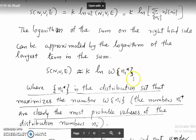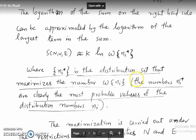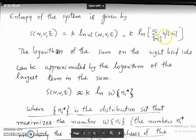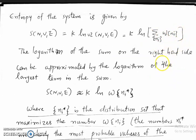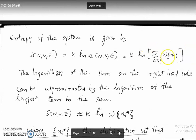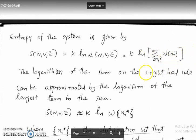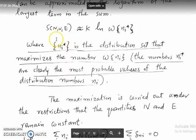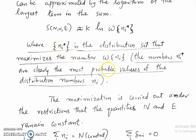How do we find the most probable distribution? We find it by maximizing W(Ni). Given the expression for W(Ni), we maximize it to find the most probable distribution set and the most probable distribution values.